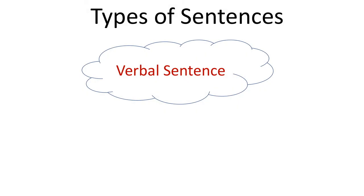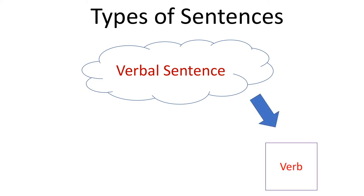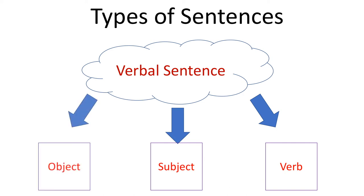There are two types of sentences in Arabic. The verbal sentence starts with the verb and consists of a verb, subject, and object. Here are two examples.